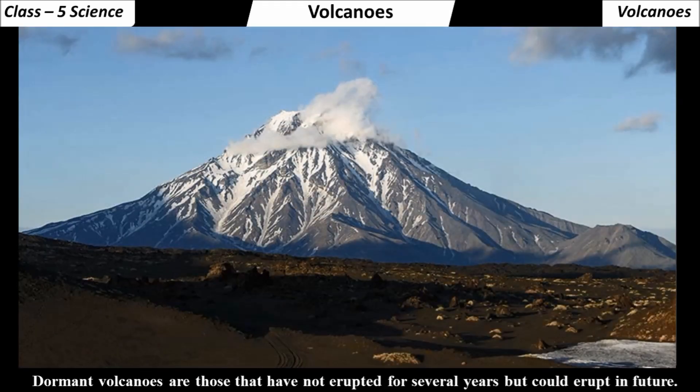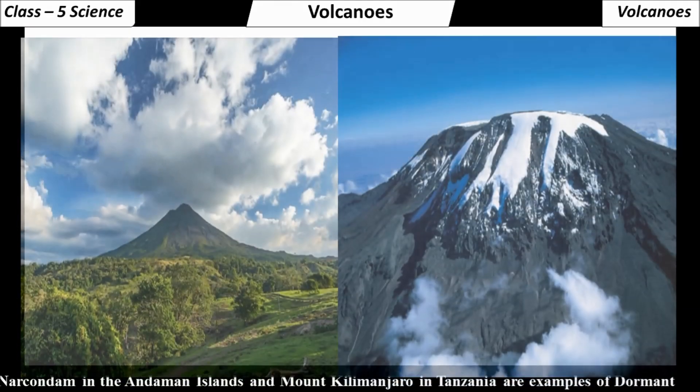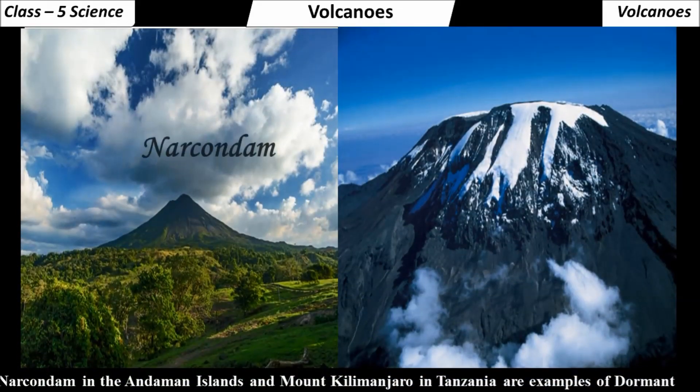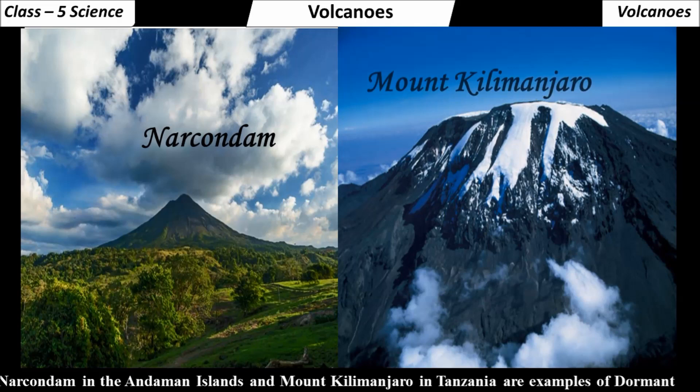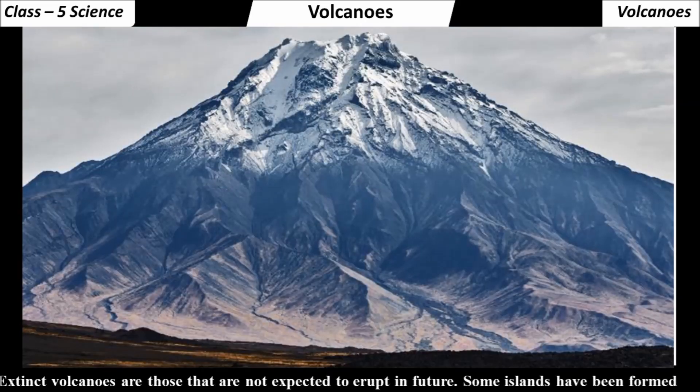Dormant volcanoes are those that have not erupted for several years but could erupt in the future. Nakandam in the Andaman Islands and Mount Kilimanjaro in Tanzania are examples of dormant volcanoes.